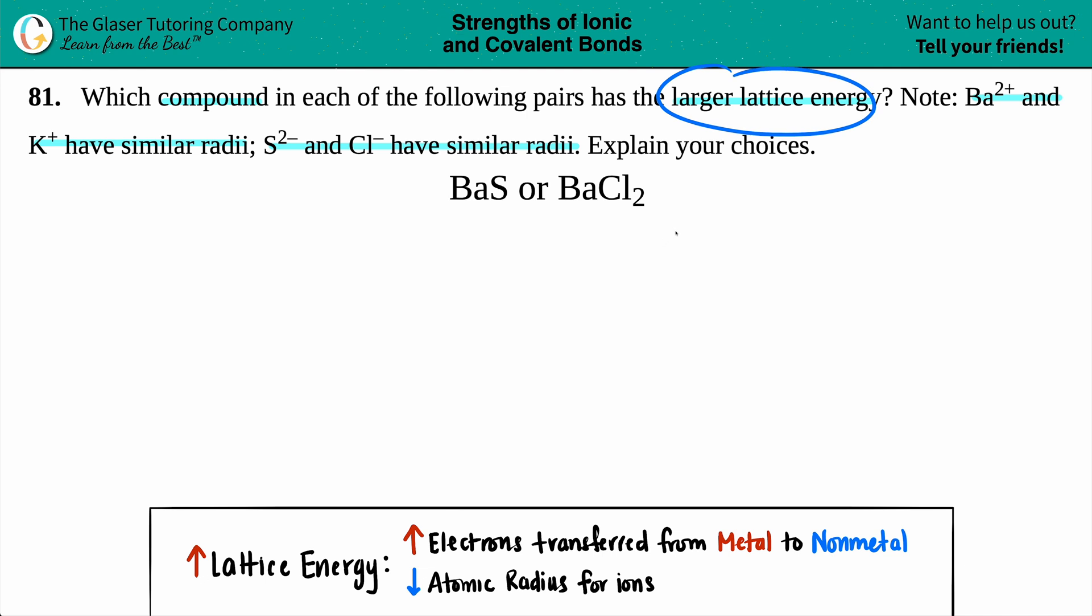Now a lattice energy is just the amount of energy needed to take an ionic compound and split it up so that the ions act independently and they're just chilling by themselves.